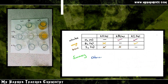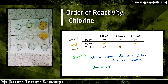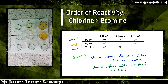To summarise: chlorine displaces both bromine and iodine — we saw a colour change — therefore chlorine is the most reactive of the three. Bromine displaces iodine but not chlorine. Therefore chlorine is the most reactive, bromine is the second most reactive, and iodine is the least reactive.